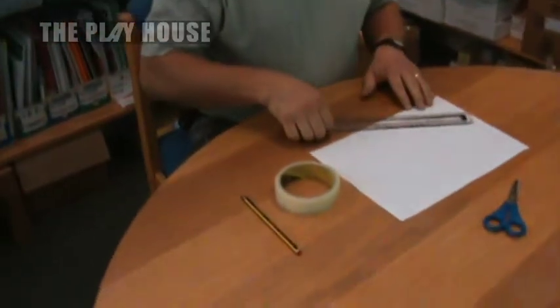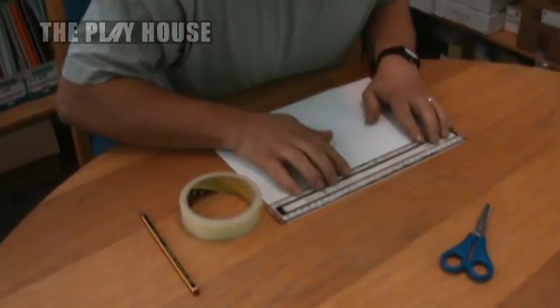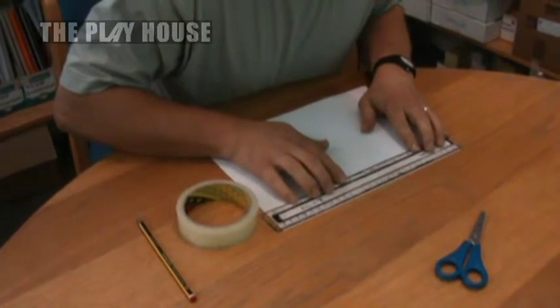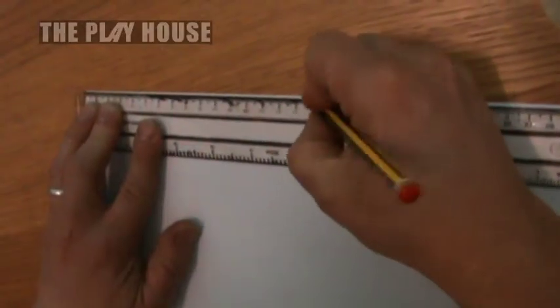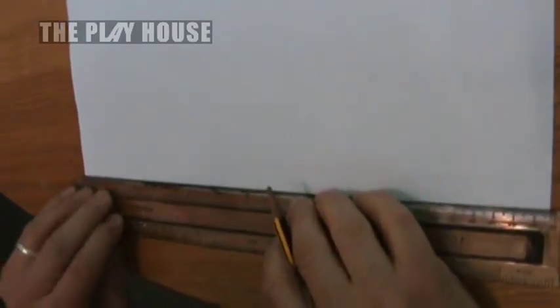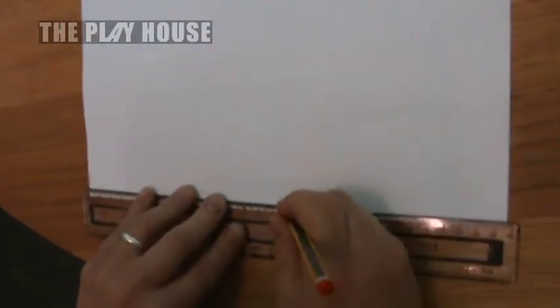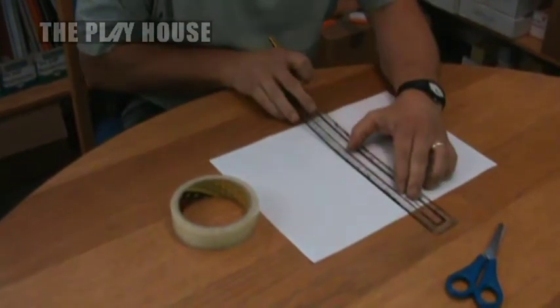So we start by measuring 16cm or 160mm, whichever you prefer, on both sides alongside the A4 piece of paper. Draw a line between those two points.